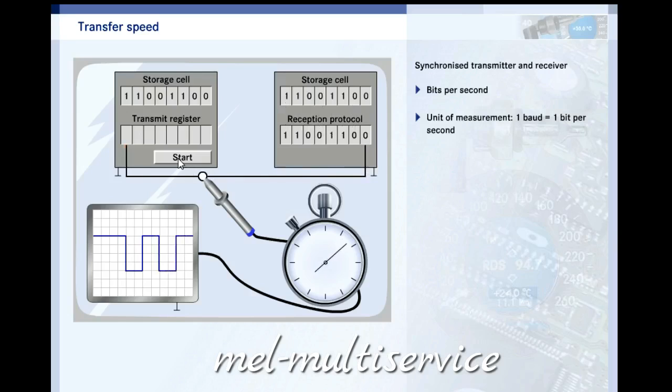In the sequence you just saw, it took 8 seconds to transfer 8 bits. The transfer speed was therefore 1 baud. On a high speed CAN bus, this happens much faster. Typically, half a million bits are sent and received per second. Thus, the high speed CAN bus is specified as 500 kilobauds.